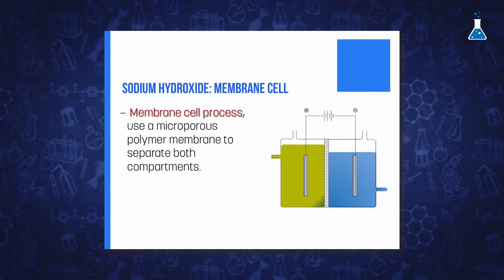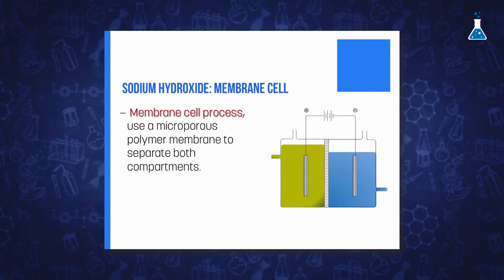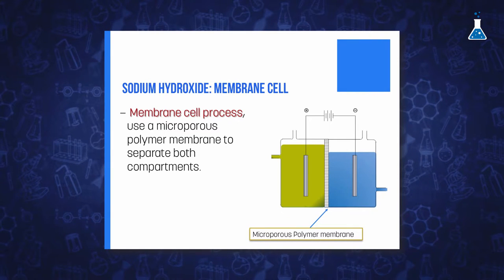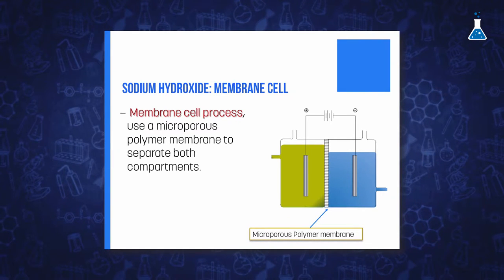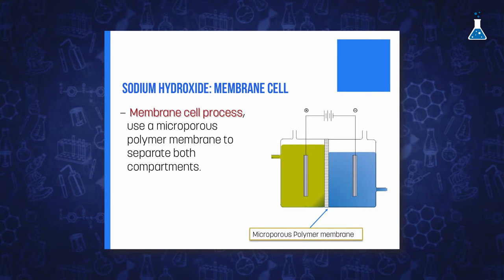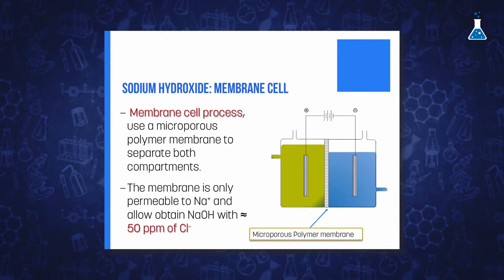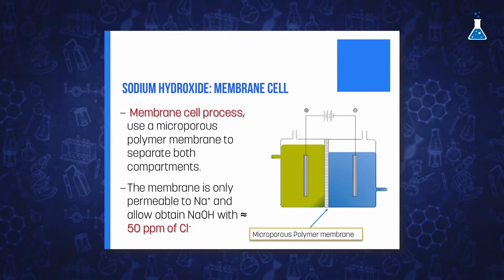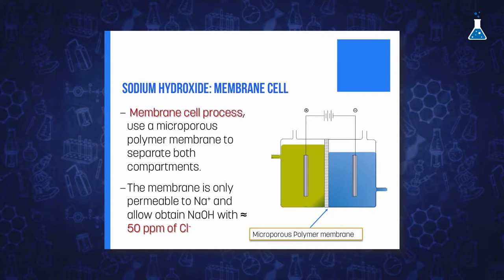The membrane cell process is quite similar to that described for the diaphragm, but in this case there is a microporous polymer membrane to separate the anode and cathode compartments. The membrane is only permeable to sodium ions, which guarantees to have a hydroxide solution that contains approximately 50 ppm of chloride ions.